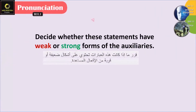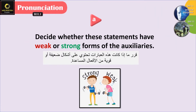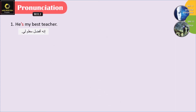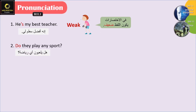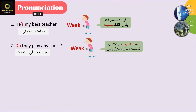Now let's see Exercise 1: decide whether these statements have weak or strong forms of the auxiliaries. 'He's my best teacher' — the 'is' is contracted here, so it's weak. 'Do they play any sport?' — it comes at the beginning of a question, so it's weak. 'She was late' — a normal statement, so it's weak.